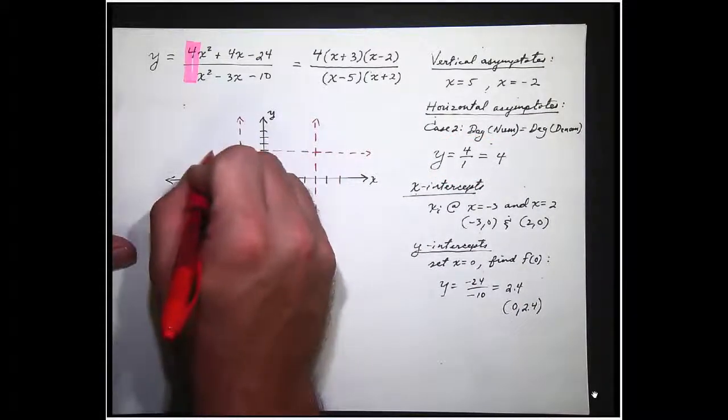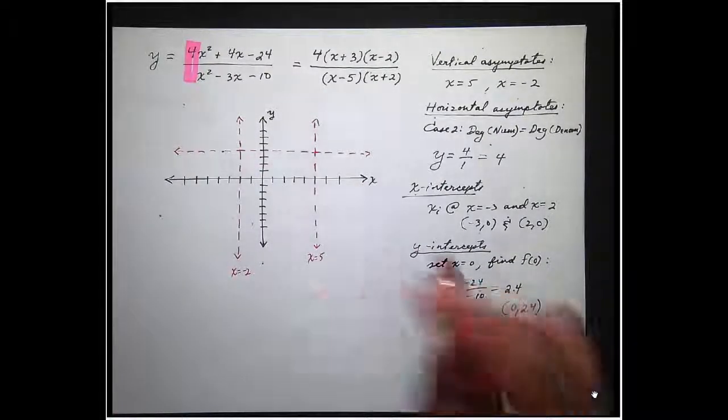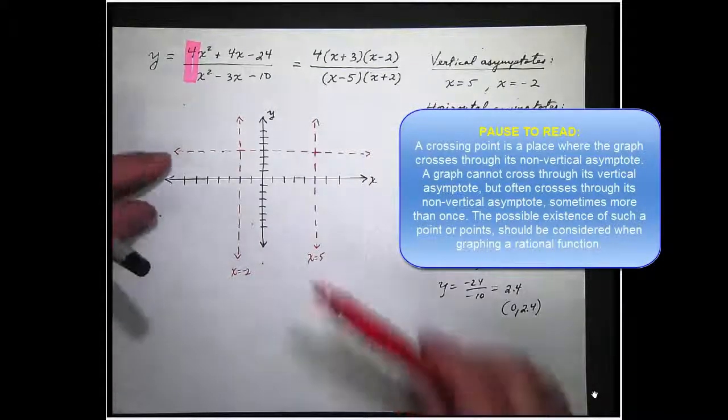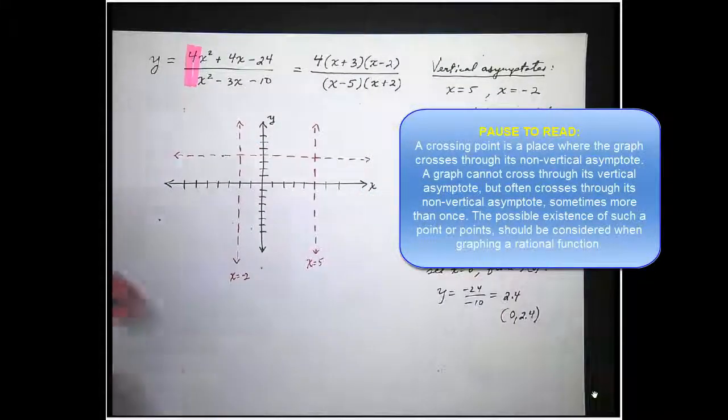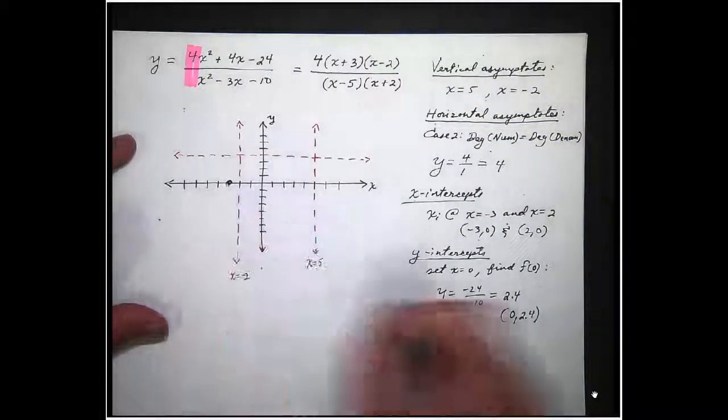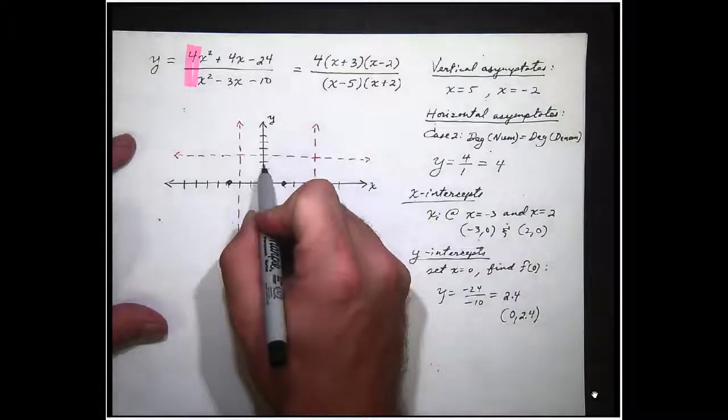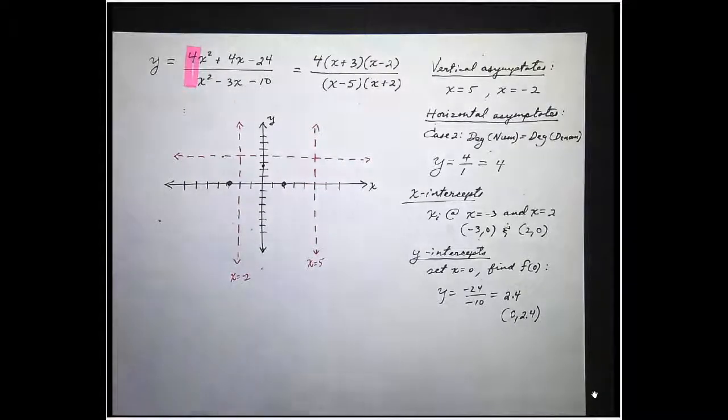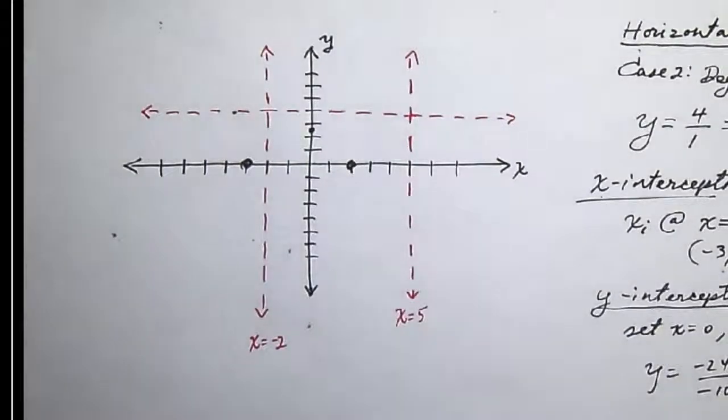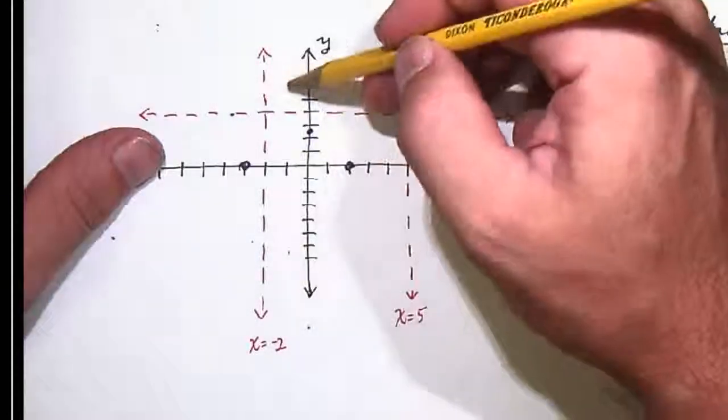And because this is case 2, in a moment after I plot the points I have, I will check if we have a crossing point. If we have a place in which the graph crosses through here. Let me graph these points. x-intercepts, negative 3 comma 0. Another one at 2 comma 0. A y-intercept at 0 comma 2.4. So maybe right there.